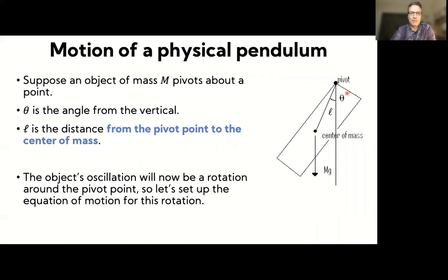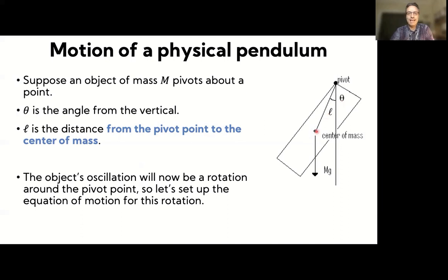We have our mass rotating around the pivot point. If we denote the center of mass, this whole mass rotates around the pivot point at angle theta. The pivot point is the fixed point. We characterize the center of mass, and we call L the distance from the pivot point to the center of mass — not the total length of the pendulum, just that distance.